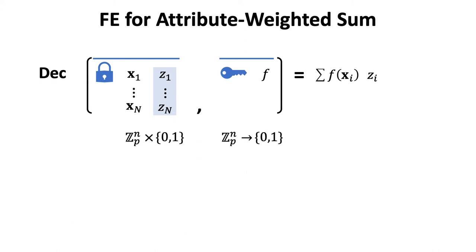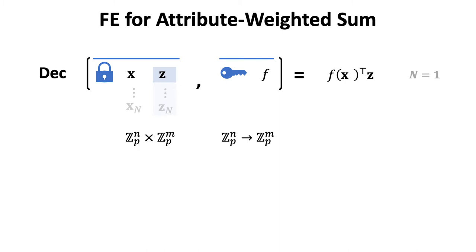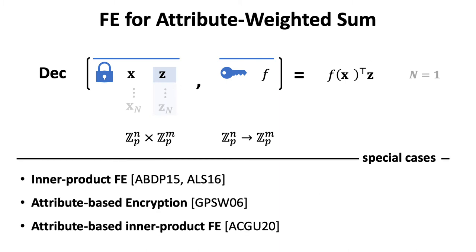Furthermore, in the above we have zi being a boolean variable and function f being a boolean function. We will actually consider a more general form where zi is a vector over a larger field and the product becomes an inner product operation. This allows us to capture more applications such as computing average salaries of a particular group of people. Even with the one-slot case, this notion covers a set of classical and newly introduced functionalities.